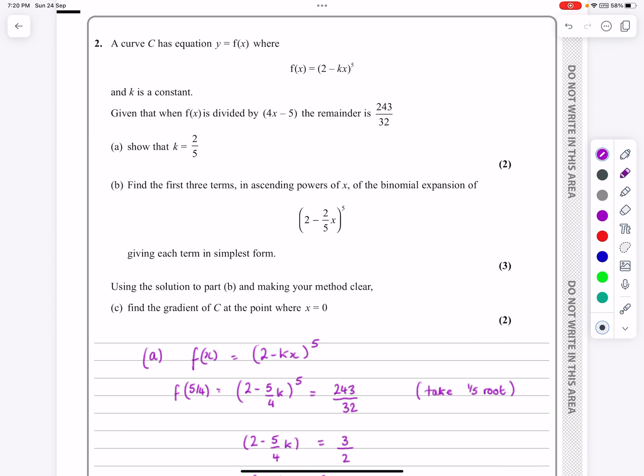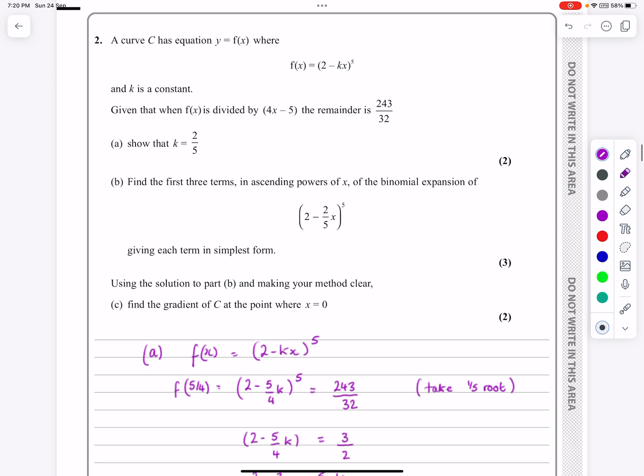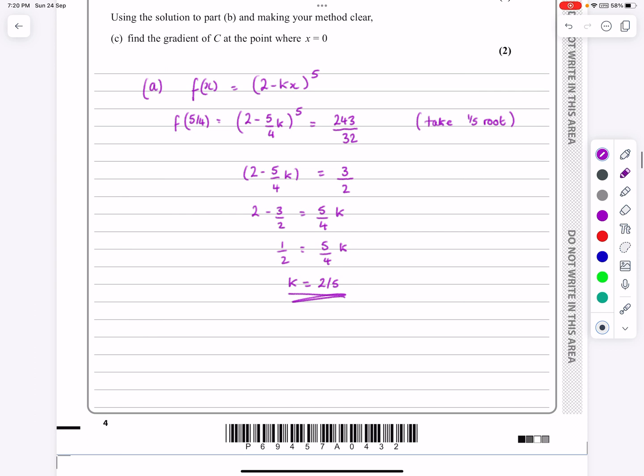Part B, find the first three terms, in ascending powers of x, of that binomial expansion. Right, okay, yeah, no problem with the binomial expansion.